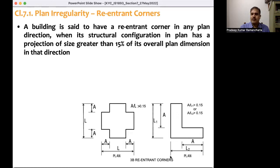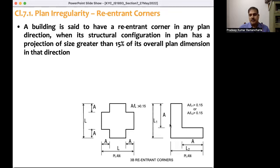When it comes to the second figure, the projected part is A and the plan length in the x direction is L2. So A divided by L2, and along the y direction also A divided by L1 is greater than 15 percent. That means these two buildings are having re-entrant corners in two plan directions.